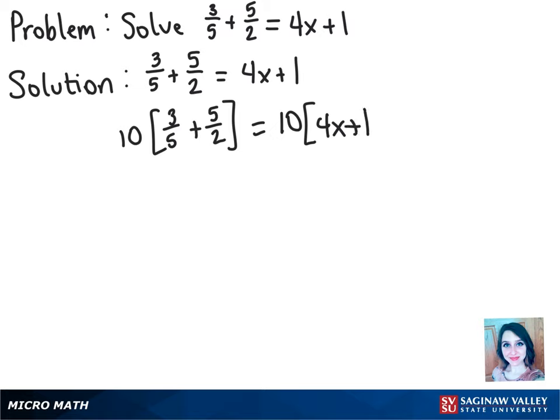So now we look at multiplying those. 5 goes into 10 twice in the 3 fifths, so we're really going to cancel and divide before we multiply. That leaves us with 2 times 3 once it cancels, which gives us 6. 2 goes into 10 five times, so that 2 cancels out there. So we really have 5 times 5, which is 25. And then that equals 40x plus 10.